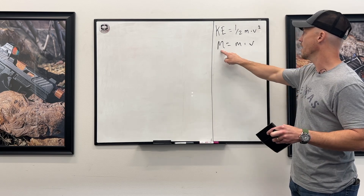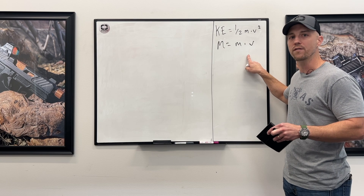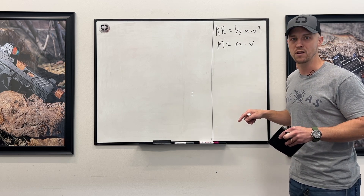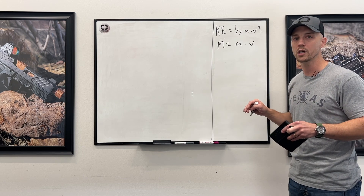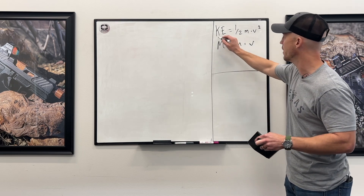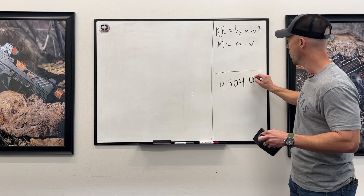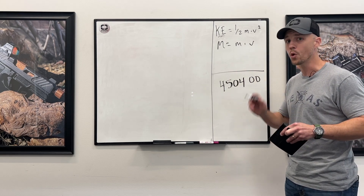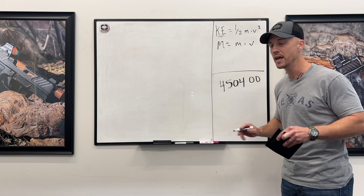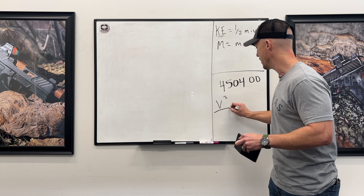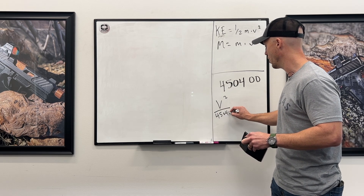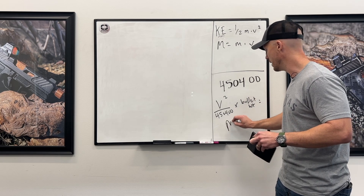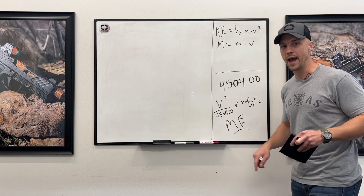Why does this matter? Well, a guy who loves momentum is going to like a 230 grain .45 ACP, and the guy who loves energy is going to love a 50 grain 9mm at 2000 feet per second. The magic number for muzzle energy is 450,400. Velocity squared divided by 450,400 times bullet weight equals muzzle energy. You can use this number yourself to actually compare cartridges.